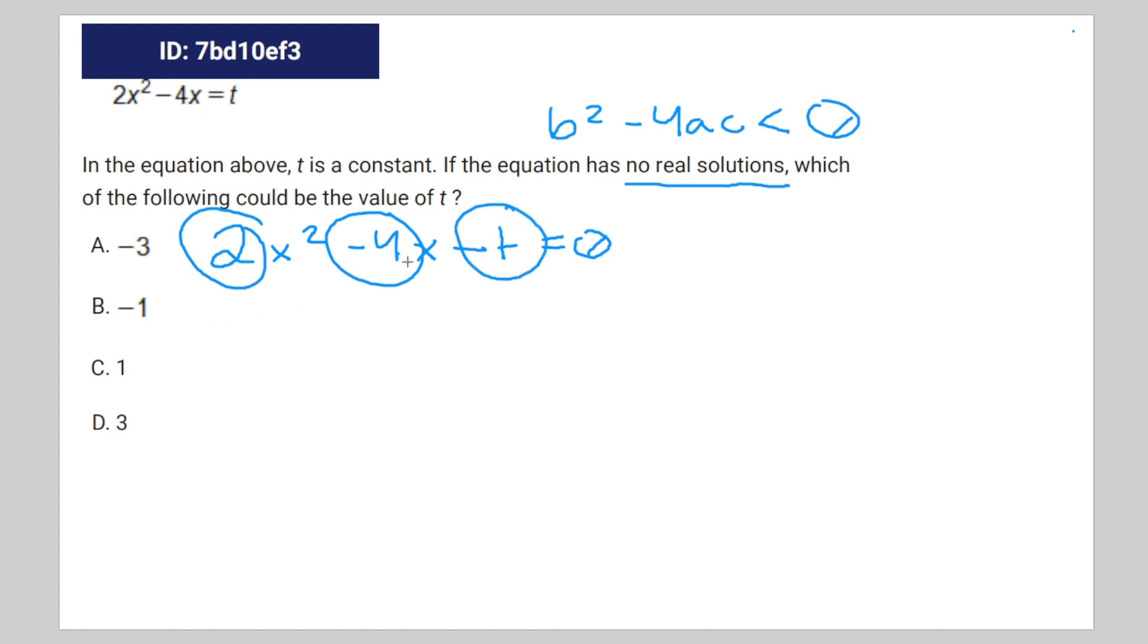So that's going to look something like this. 16 minus 4a, which is 2, times c, which is negative t, is less than zero.